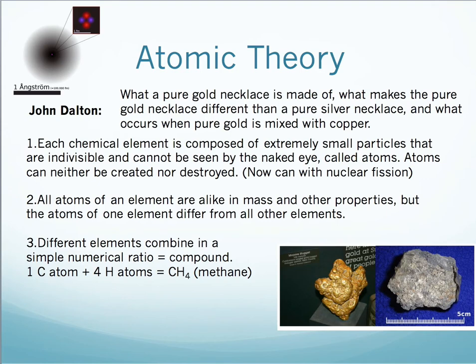And he came up with a few theories, which some of them have been disproven now, but still are quite relevant. Number one is that he came up with the idea that each chemical element is composed of extremely small particles that are indivisible and cannot be seen by the naked eye, which are called atoms. Atoms can neither be created nor destroyed. Up here is a picture of a helium atom. The purple dots and the red dots represent the neutrons and protons in the nucleus. And the black area around the nucleus represents the electron cloud.